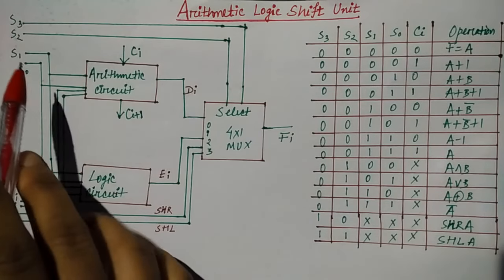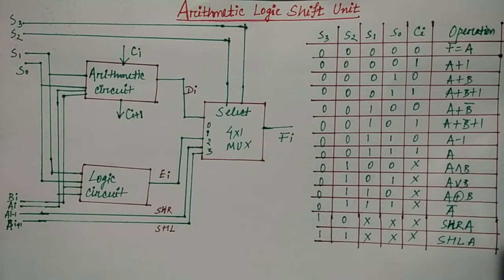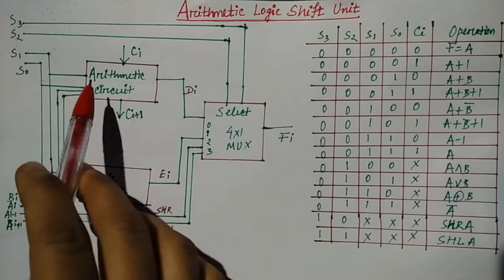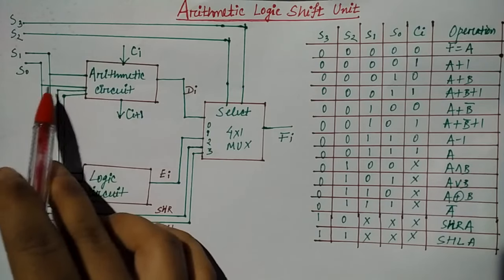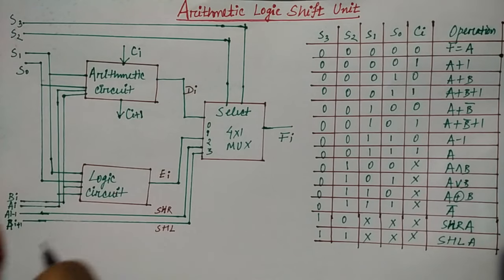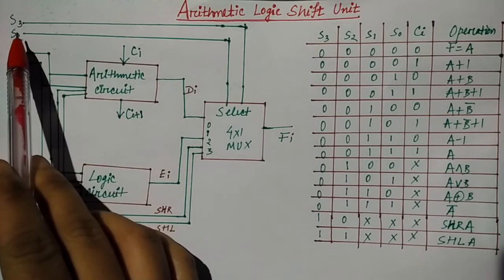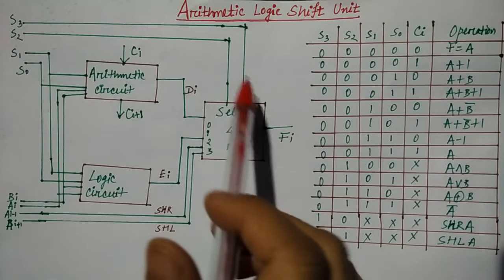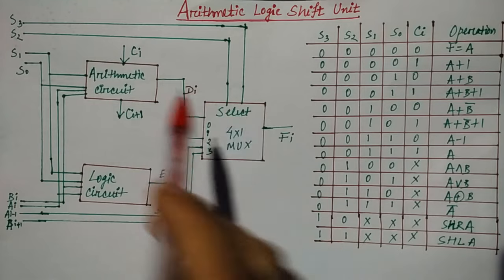The first thing is that S0 and S1 are two selection lines. The S0 and S1 are for both arithmetic circuits and logic circuits. Then, the next two are the selection lines S2 and S3. S2 and S3 are both the selection lines of the multiplexer.